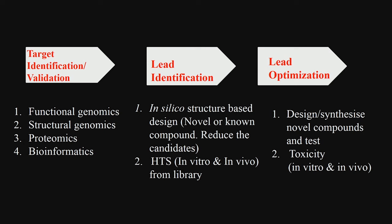Target identification and validation can be broken down into several steps. Genomics: I need to know what genes get upregulated in a disease state and look at the structural features to identify what protein is involved. I need to purify the protein, get the 3D structural details, and get the active site details. That is what target identification and validation means.